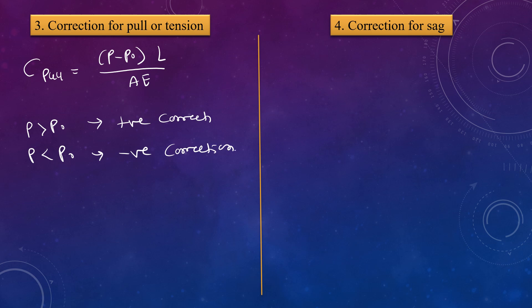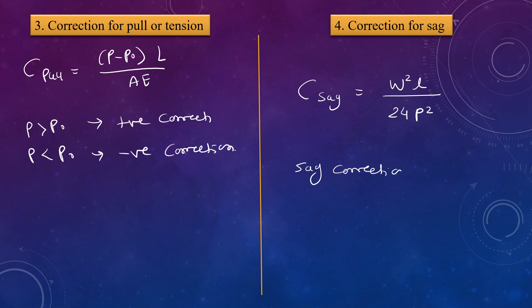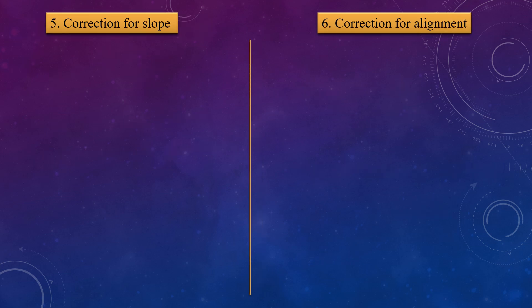The fourth correction is the correction for sag. The formula is: C_sag = W² × l / (24P²). It is important to note that the sag correction is always negative.